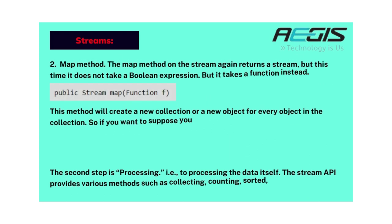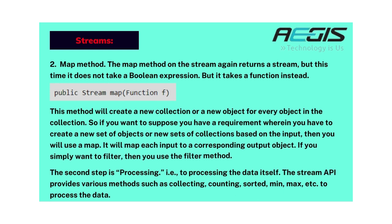The map() method on a stream returns a stream but takes a function instead of a boolean expression. It creates a new object for every object in the collection. So if you need to create a new set of objects or collections based on input, you use map(). If you simply want to filter, then use the filter() method. The second step is processing the data itself. The Stream API provides various methods such as collect(), count(), sorted(), min(), max(), etc. to process the data.